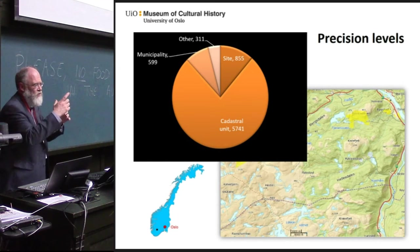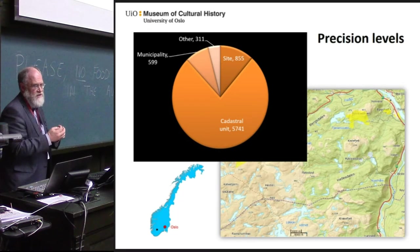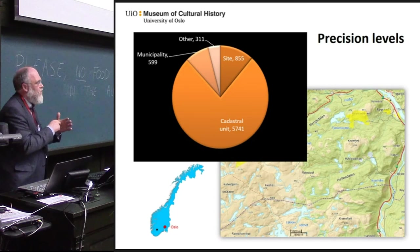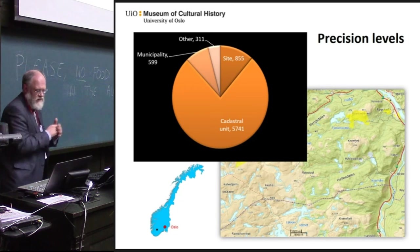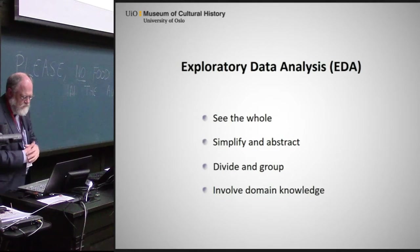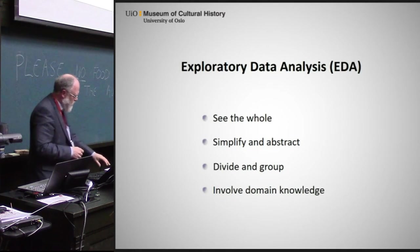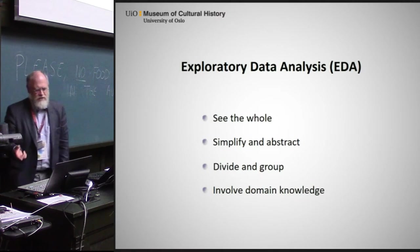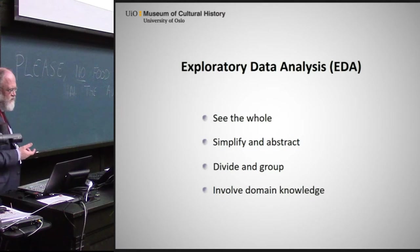When you have all of Norway on one page, you can use also those with less precise information. But when you want to see what artifacts have been found close to a river on certain types of soil, you can't use those — you have to use only those with site precision level. We have worked with this exploratory data analysis, where you try to see the whole, simplify and abstract, divide and group, and involve domain knowledge.